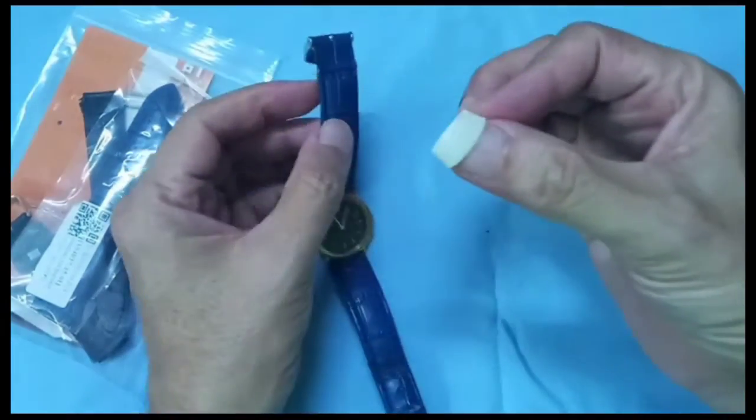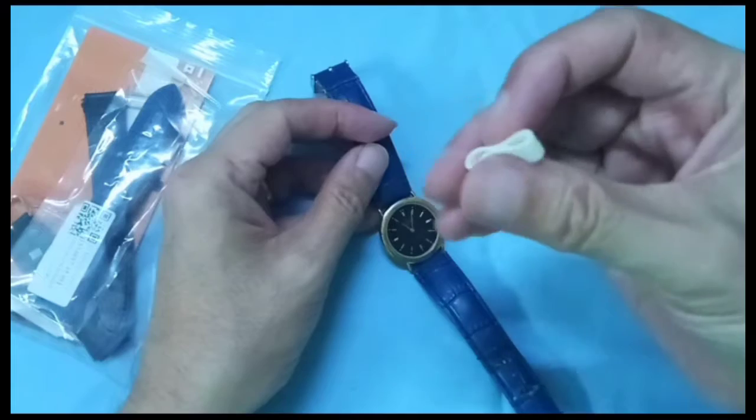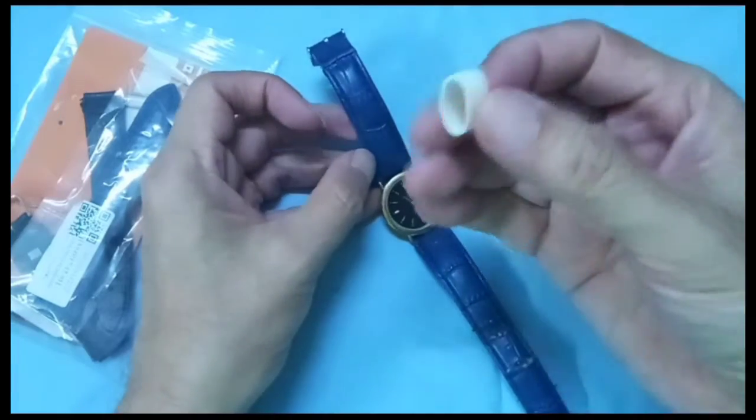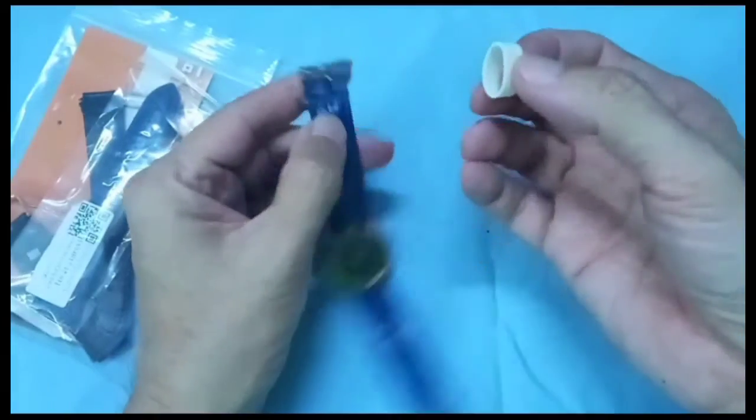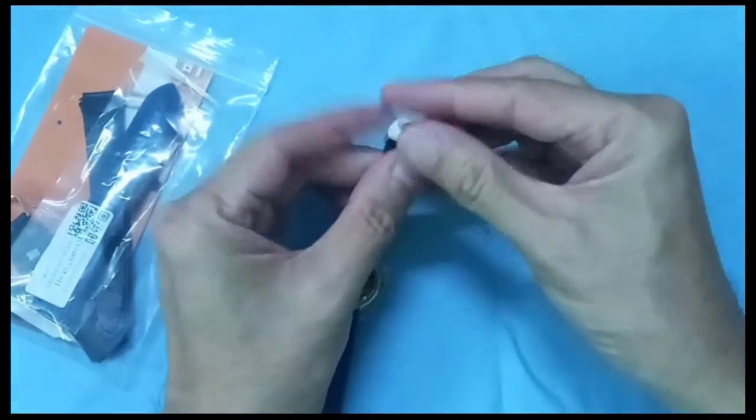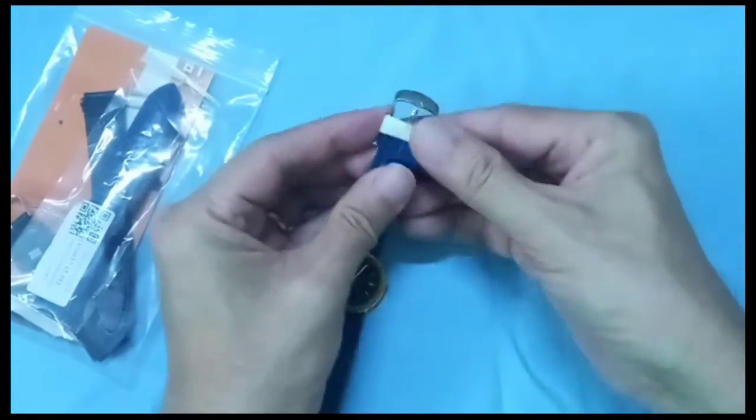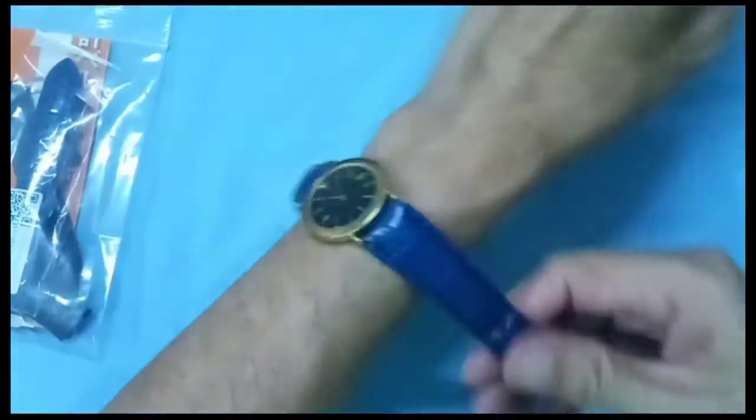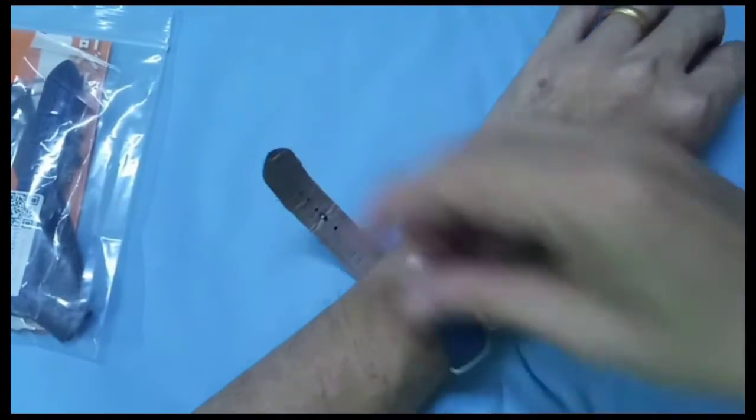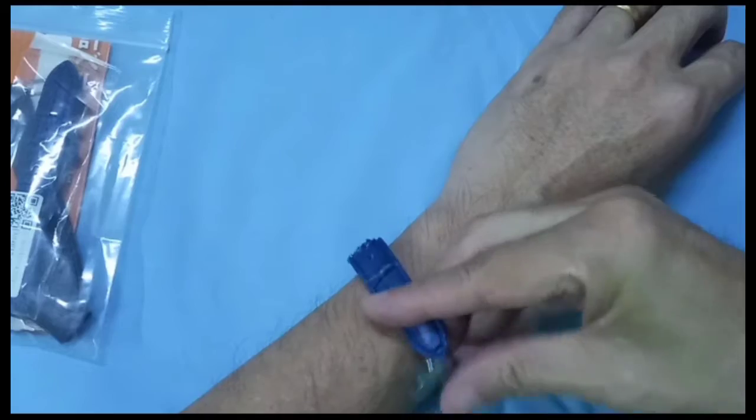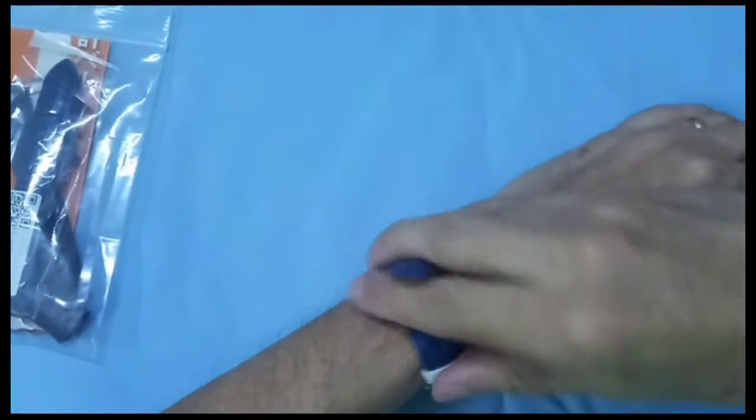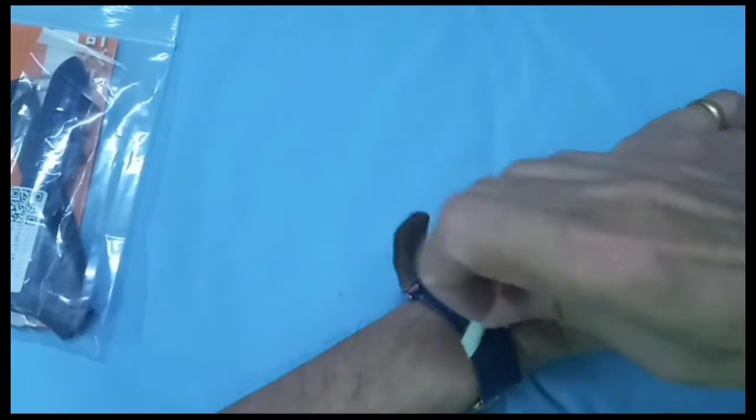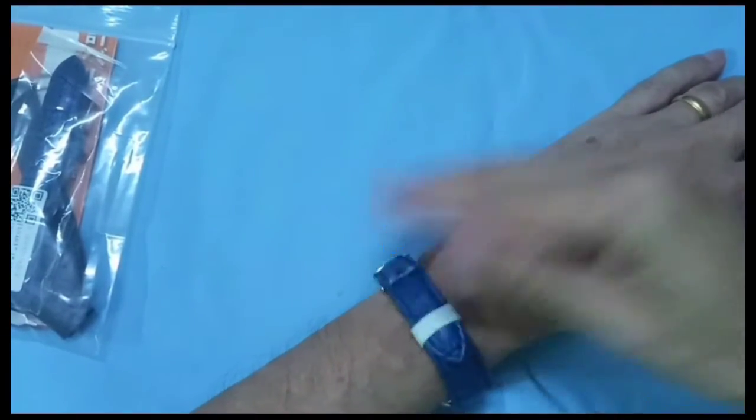See how easy it is to remove the alternative to the watch strap loop. Just use a rubber band or rubber holder. As you can see the rubber band works well as a strap loop alternative.